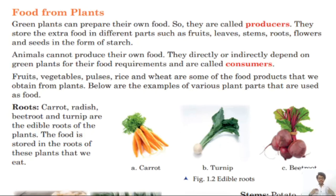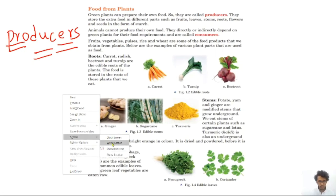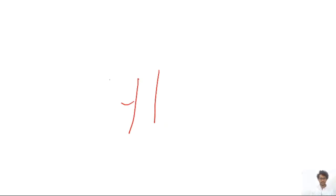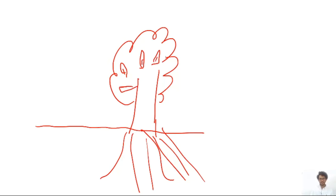What do we mean by plant parts? A tree has roots below the soil, leaves, and a stem — these are the basic parts of a tree. Below are examples of various plant parts that are used as food.